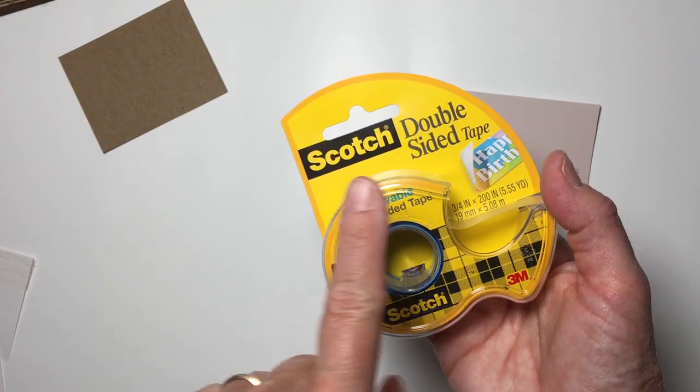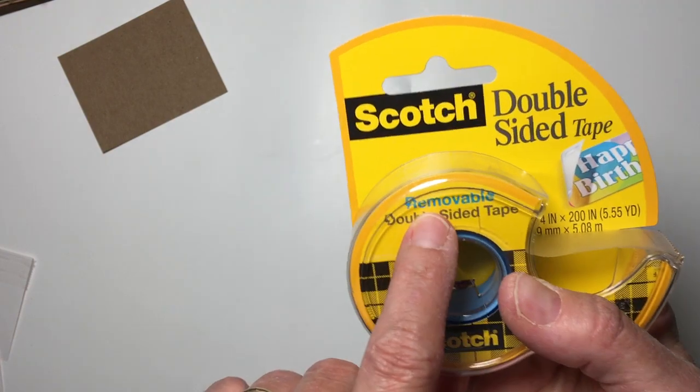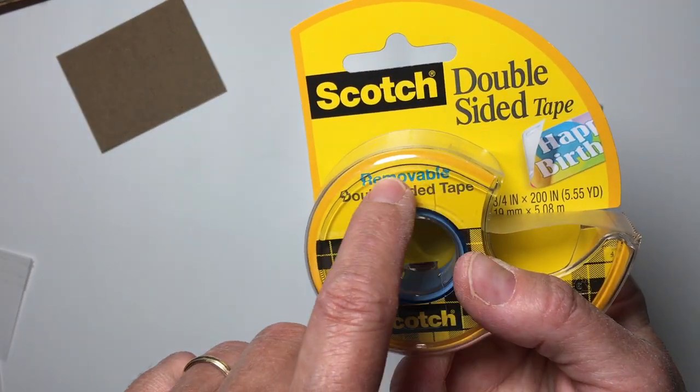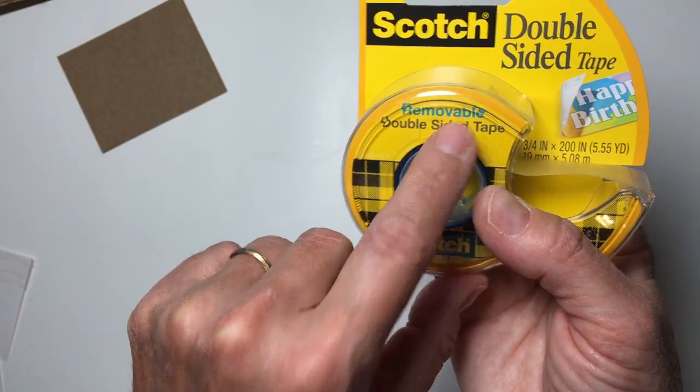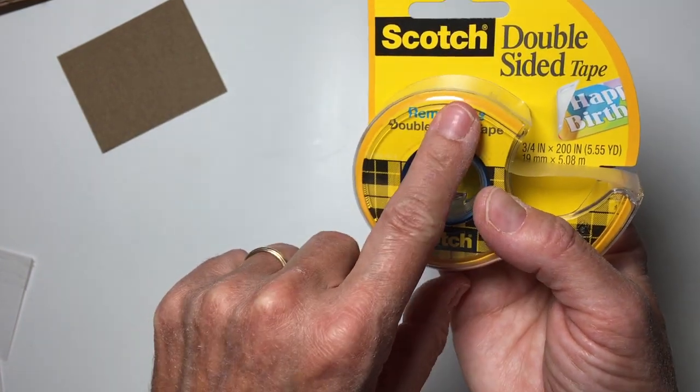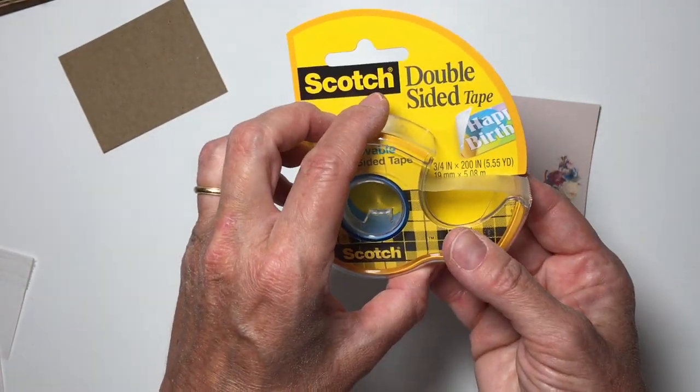You will also need, and this is the important part, this Scotch double-sided tape that is removable. They also make double-sided tape that is permanent. You want the removable. This works like the sticky backing for your sticky notes.